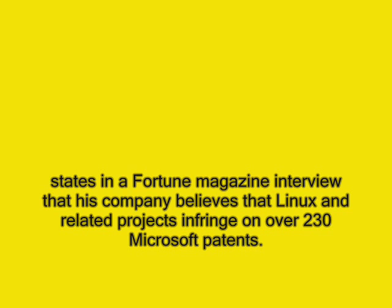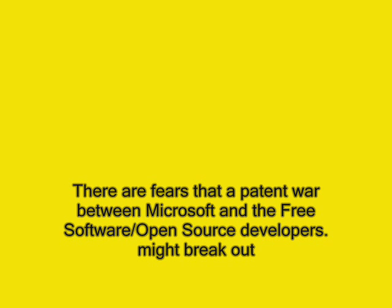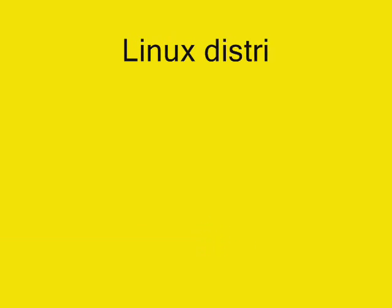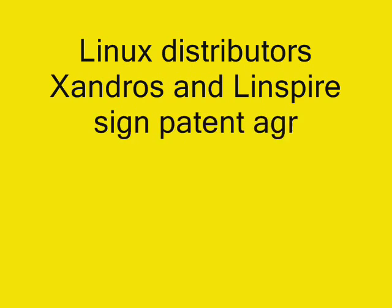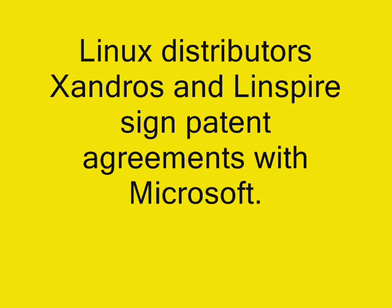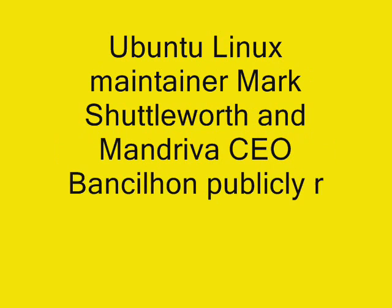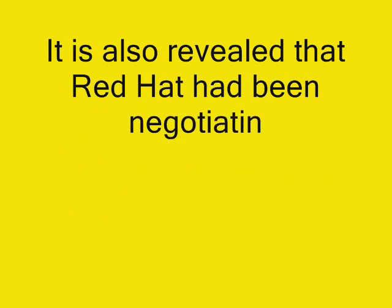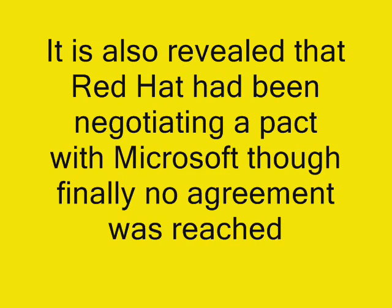May 2007: Microsoft General Counsel Brad Smith states in a Fortune magazine interview that his company believes that Linux and related projects infringe on over 230 Microsoft patents. There are fears that a patent war between Microsoft and the free software open source developers might break out. June 2007: Linux distributors Xandros and Linspire signed patent agreements with Microsoft similar to the pact previously signed between Novell and Microsoft. Ubuntu Linux maintainer Mark Shuttleworth and Mandriva CEO Ben Silhan publicly rule out making such agreements. It is also revealed that Red Hat had been negotiating a pact with Microsoft, though finally no agreement was reached.